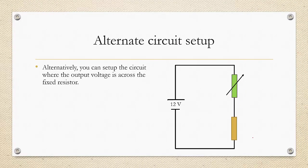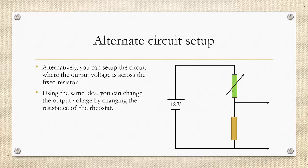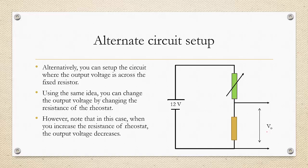There is an alternate circuit setup where the output voltage is taken across the fixed resistance instead, with the fixed resistor at the bottom and the rheostat on top. You can still change the output voltage by adjusting the rheostat, but take note: when you increase the resistance of the rheostat, the output voltage across the fixed resistor actually decreases — the effect is the opposite. Increasing the rheostat makes its share bigger, making the output across the fixed resistor smaller.